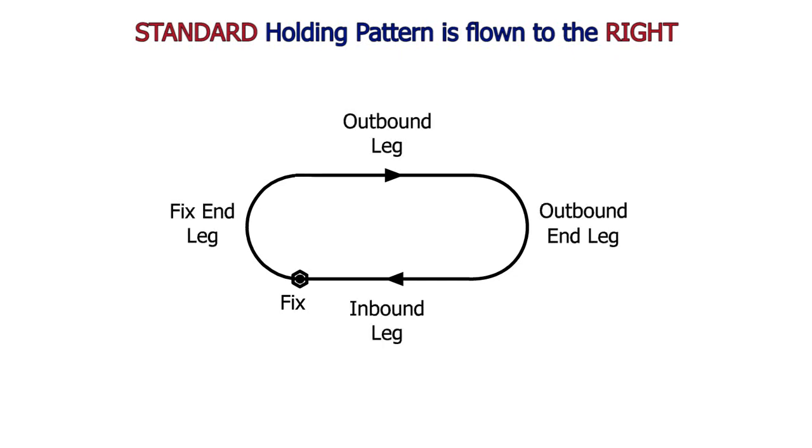The holding pattern is made up of four legs: the inbound leg, the fixed leg, the outbound leg, and the outbound end leg. Unlike a VFR traffic pattern which is rectangular, a holding pattern has the shape of a racetrack. And from now on, when you hear me say racetrack, I mean the holding pattern shape.